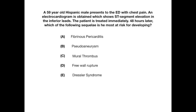The answer choices are: A, fibrinous pericarditis; B, pseudoaneurysm; C, mural thrombus; D, free wall rupture; or E, Dressler syndrome.